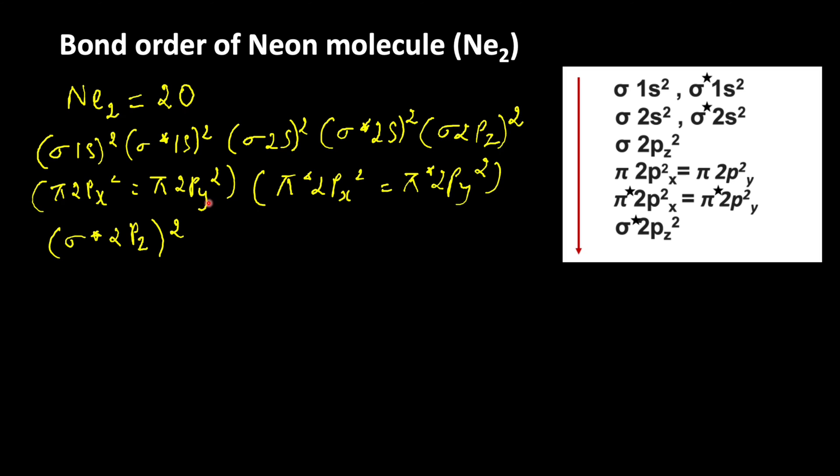Based on this information we can find the bond order of neon molecule. Bond order is equal to Nb minus Na by 2. Nb is number of bonding electrons, Na is number of antibonding electrons.